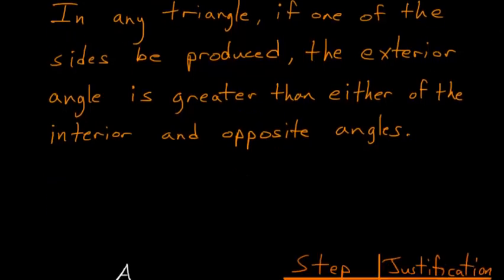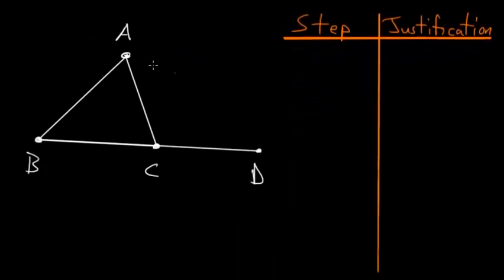So if we start with a triangle, triangle ABC, and we produce one of these lines, or essentially we extend the line BC all the way to the point D, then the goal of this proof is to show that this angle here, this exterior angle, is larger than either this angle or this angle here.